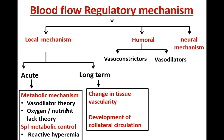The first metabolic mechanism is the vasodilator theory. If exercising with the right hand, the skeletal muscle cells of that hand are working more and are active. So what happens is they are working more, and hence in the surrounding area the amount of carbon dioxide produced in the vicinity of these skeletal muscle cells will be more because their metabolic rate has increased.